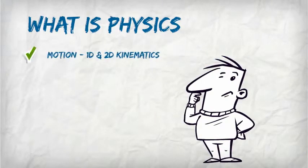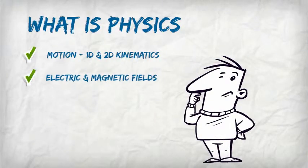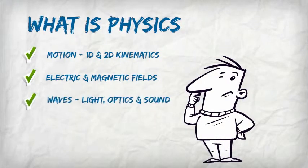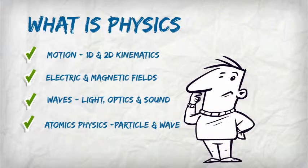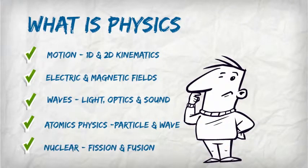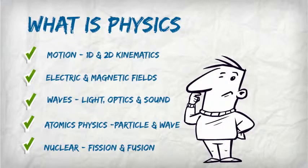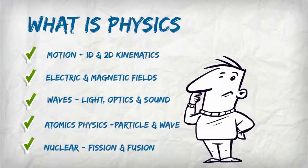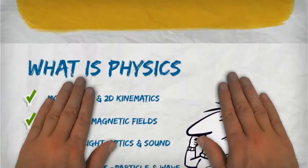In terms of what physics is, there are five key topics. We're looking at motion — 1 and 2D kinematics — electric and magnetic fields, waves and light, optics and sound, atomic physics, and then nuclear physics with fission and fusion.